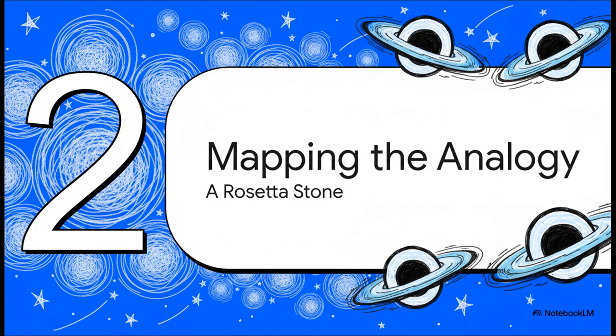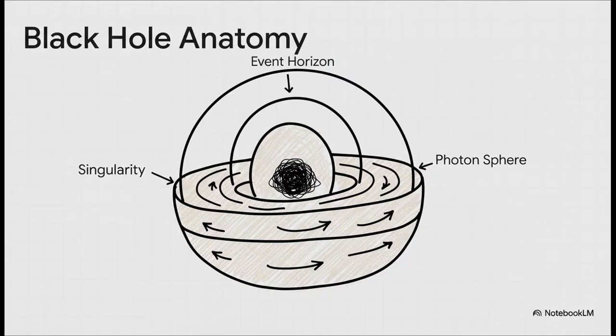All right, so let's get into the nitty-gritty. How is this analogy actually built? Well, first things first, we need a quick refresher on the anatomy of a standard, non-rotating, Schwarzschild black hole. According to general relativity, you've got these three main parts.